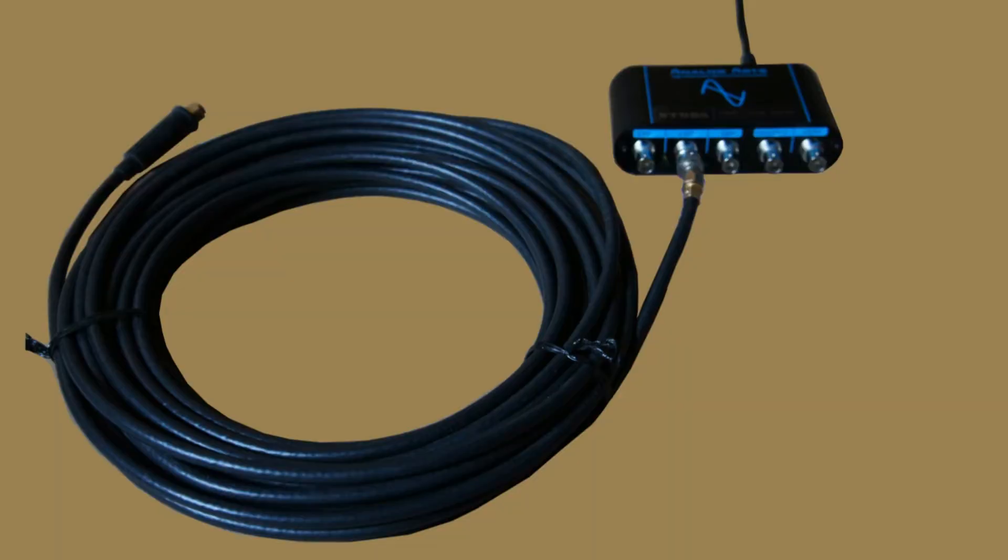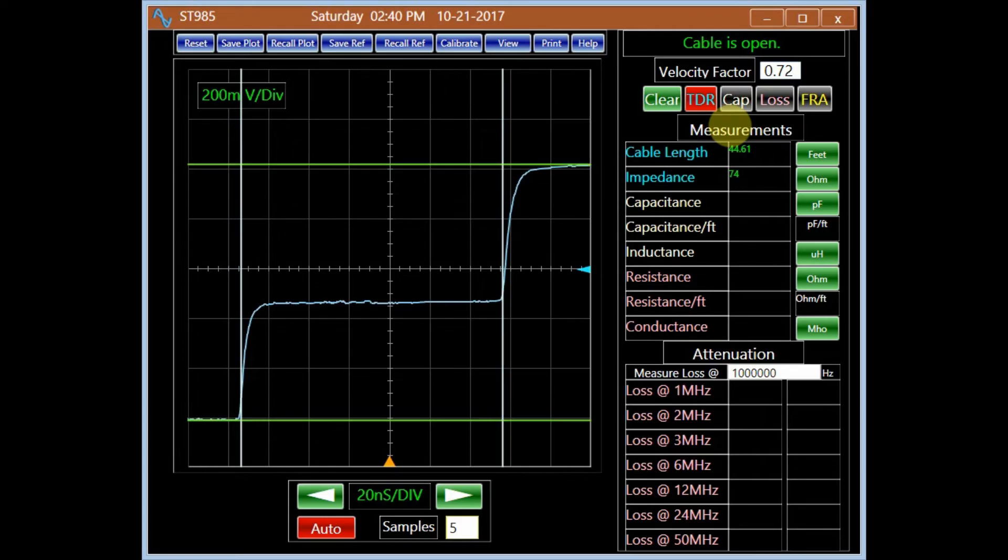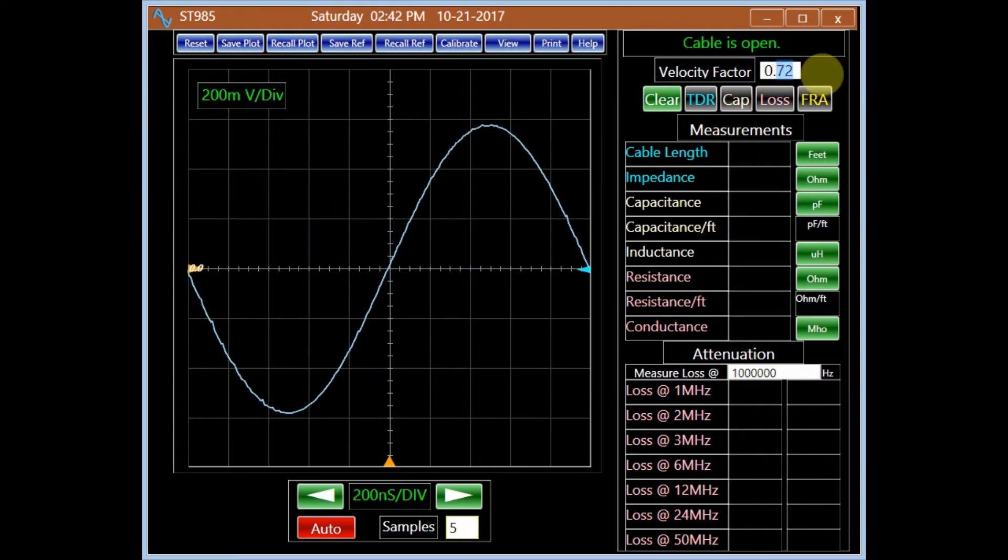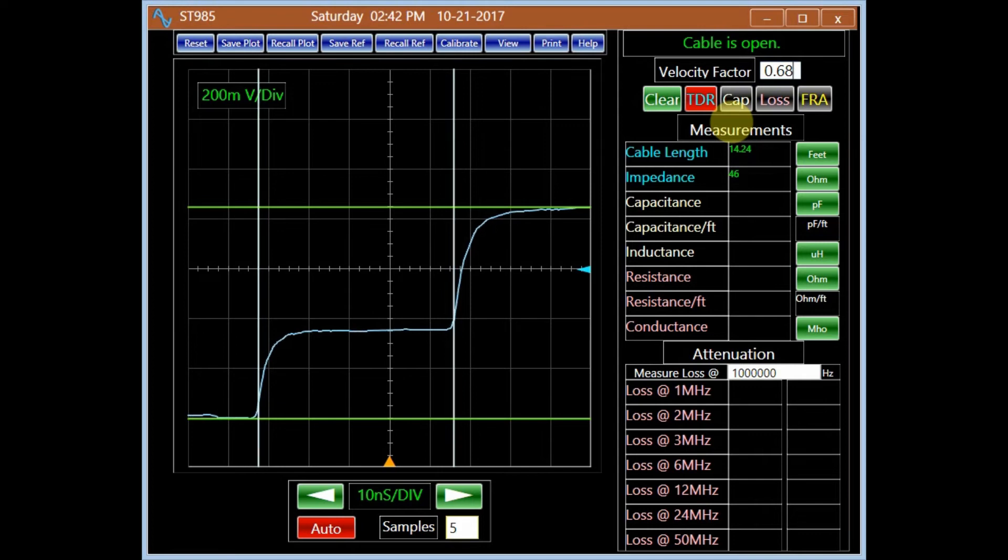Time domain reflectometry or TDR is a technique widely used to analyze cables. Instruments such as the Analog Arts ST985, based on the TDR concept, characterize the length, impedance, and other characteristics of a cable.